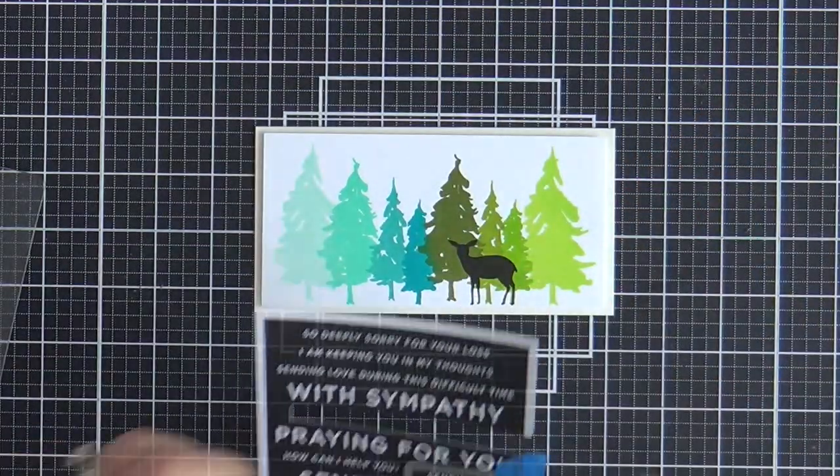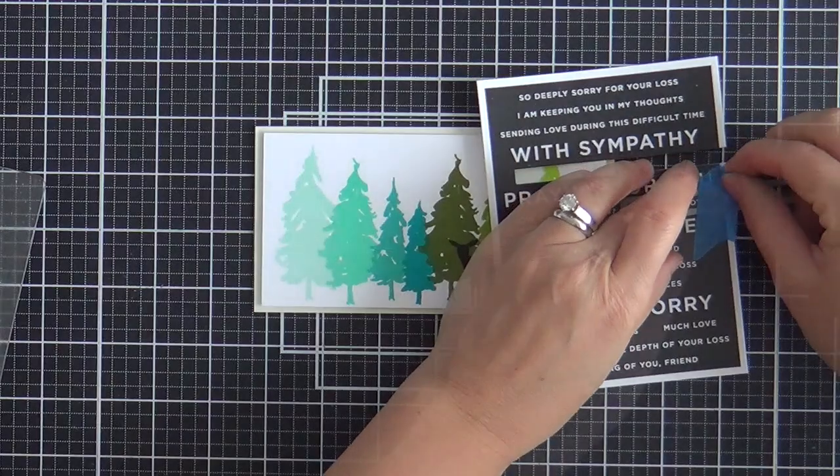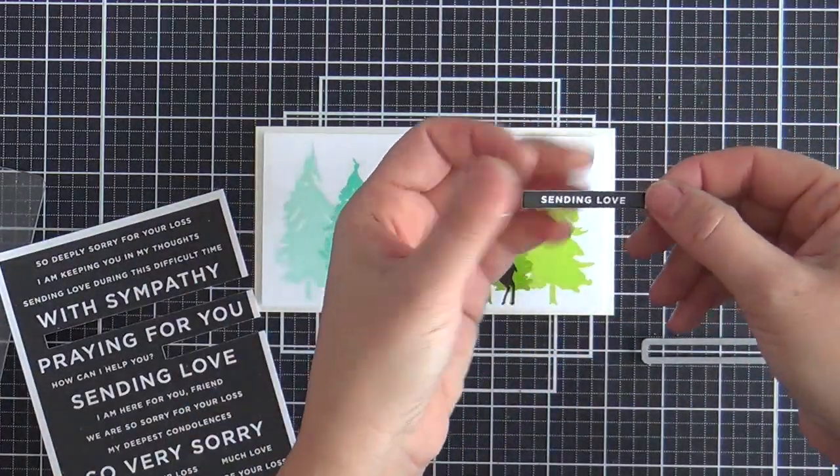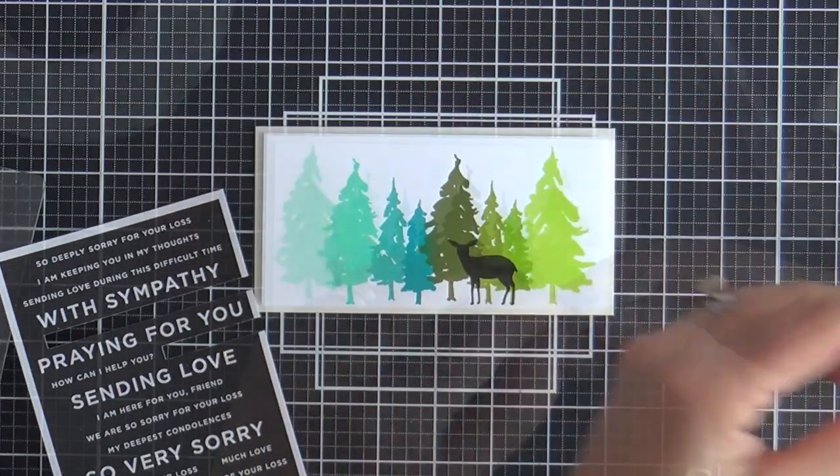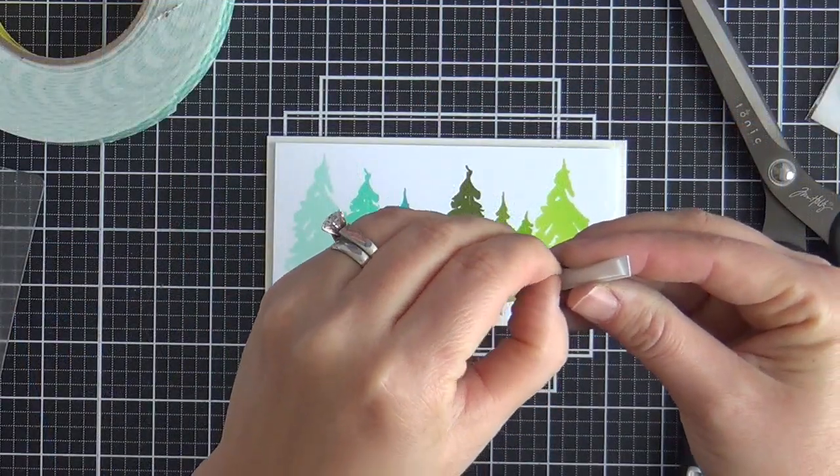Okay, this is the reverse sympathy sentiment set. And I use one of the sentiment label dies to cut out that little sending love and I'm going to pop it up.